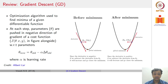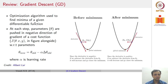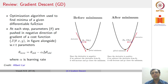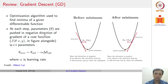We will start with a brief review of gradient descent. Gradient descent is an optimization algorithm used to find the minima of any differentiable function. The loss function used to train a neural network — mean square error so far — must be differentiable. We will see plenty of other loss functions as we go through the rest of this course. At each step, parameters are pushed in the negative direction of the gradient of the cost function, error function, or loss function.